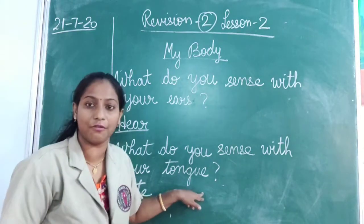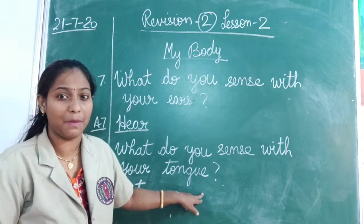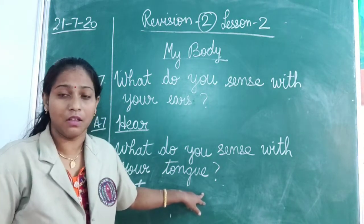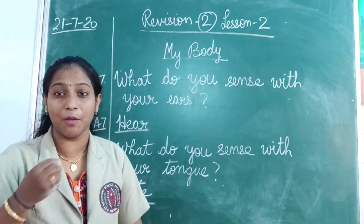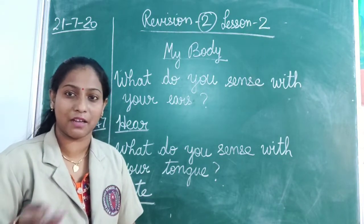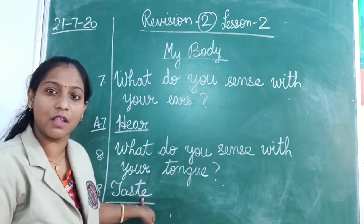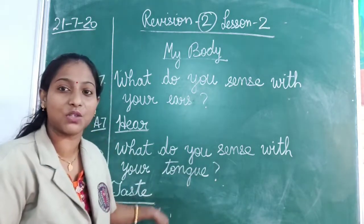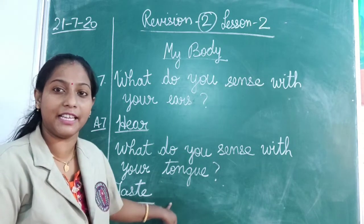So what is the function of the tongue? With our tongue we taste food — sweet, salty, bitter, which means 'karwa,' and sour. When you eat lemon it is sour, meaning 'khatta.' So your tongue helps you know the taste of food. The spelling of taste is T-A-S-T-E.